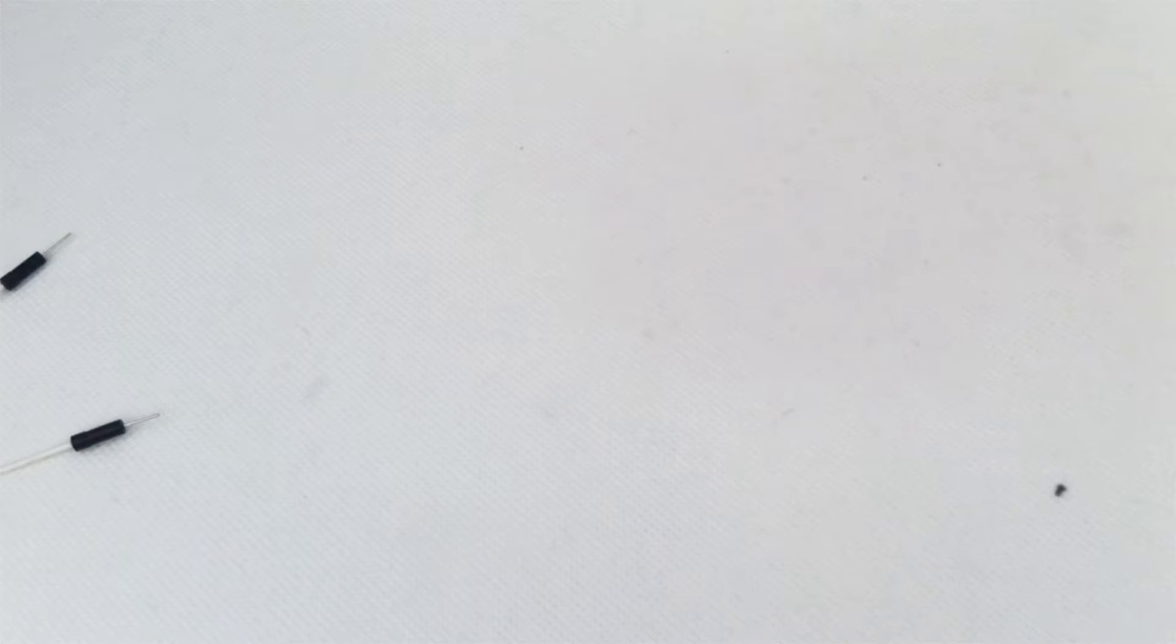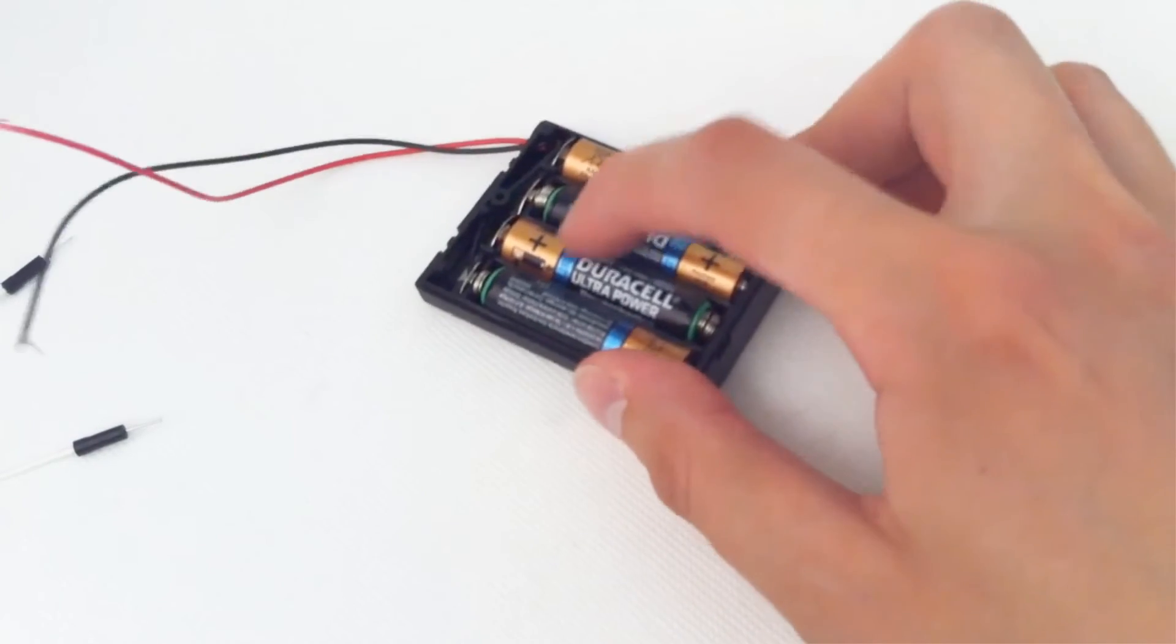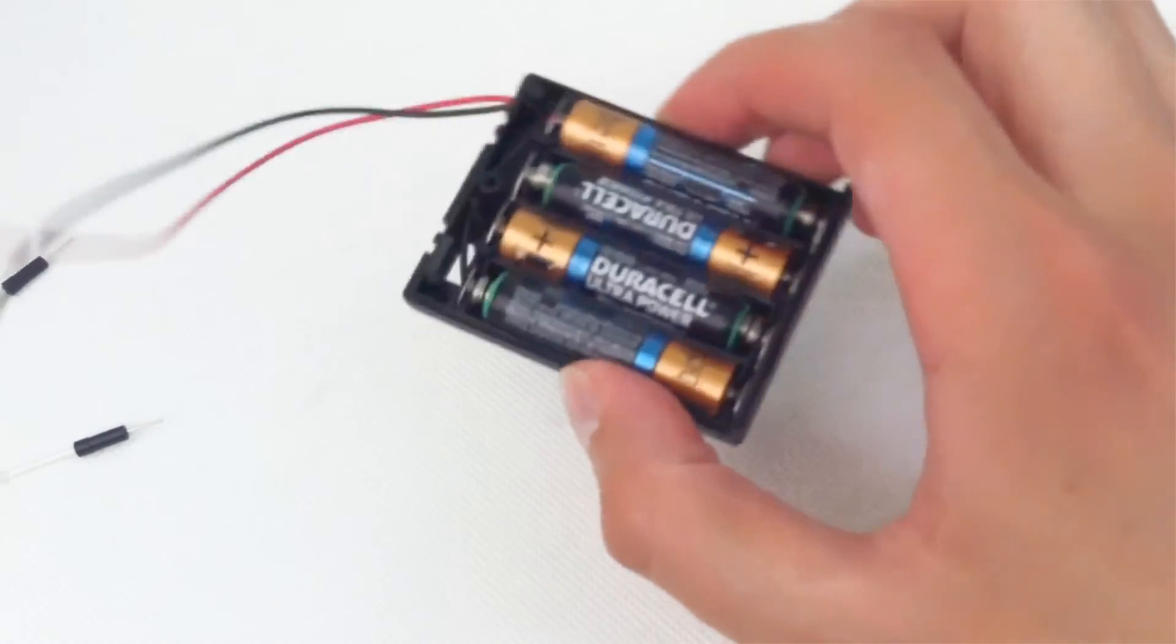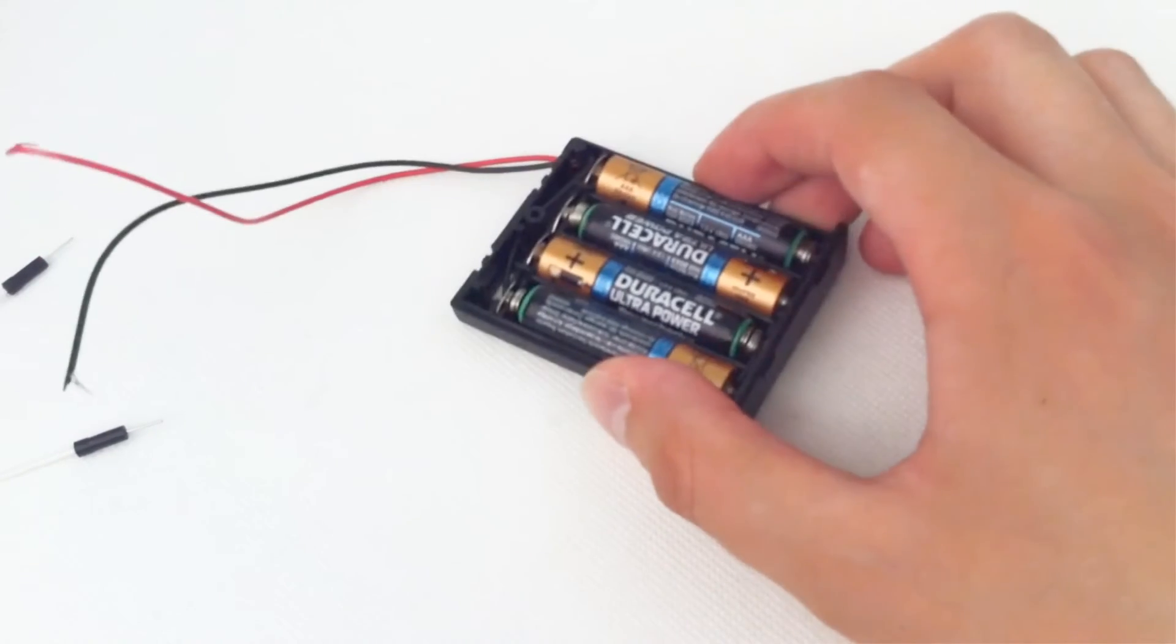Now we have our canvas but how do we power our components? Basically circuits use a small charge that comes from battery. Here we have four triple A batteries each one and a half volts which gives us a six volt power supply.